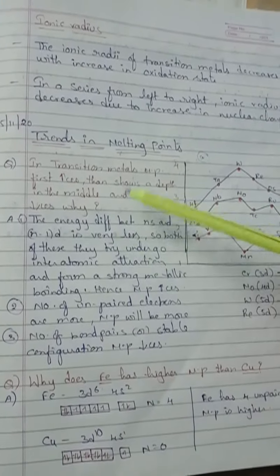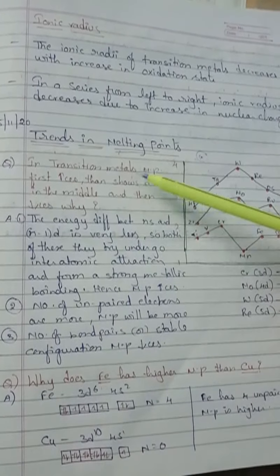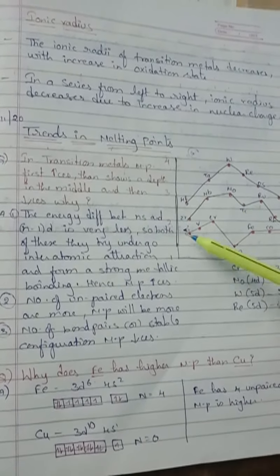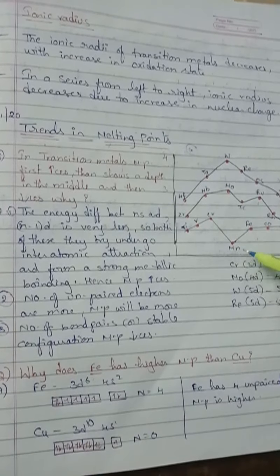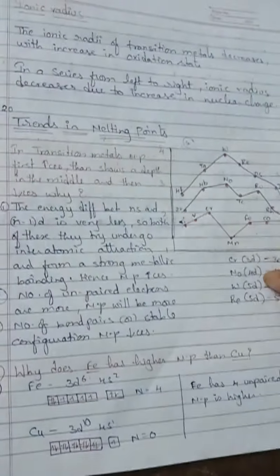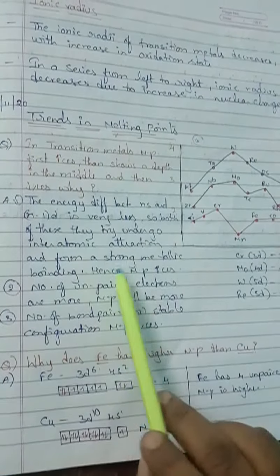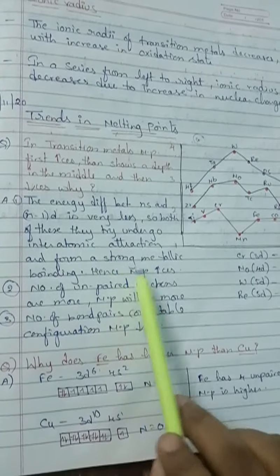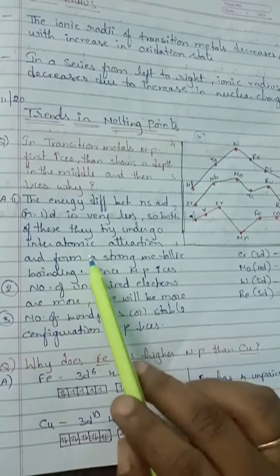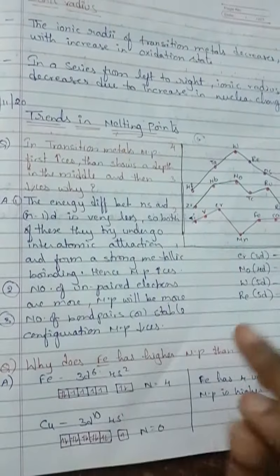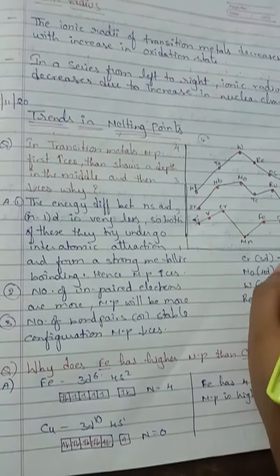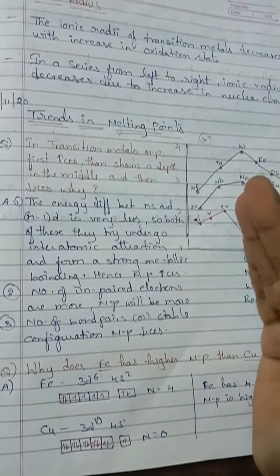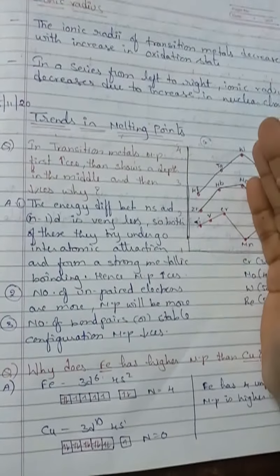This is how you explain the melting point of transition elements — why it first increases, then decreases, and again at last it is decreased. The first reason: the bond between the Ns orbital and N-1d orbital will be strong, forming a strong metallic bond, and breaking it requires higher energy — meaning a higher melting point.